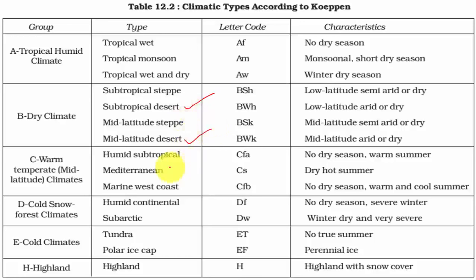In temperate regions we have four important types. The first is humid subtropical, also known as China type, Gulf type, or Natal type. Here there is no distinct dry season, winters are warm, and maximum rainfall occurs in winter. The China type has pronounced monsoon characteristics, making it a temperate monsoon type, whereas in the Gulf type monsoon characteristics are less pronounced.